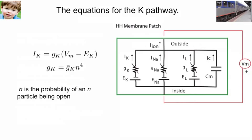Let's take them in turn. The equation for the potassium pathway, IK, is GK times Vm minus EK. There are a couple of important things to notice here. First, as we were saying last time around, pathway resistance has been replaced by the pathway conductance.